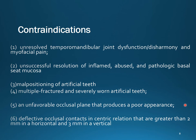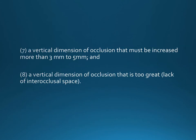If there are deflective occlusal contacts — a condition in which tooth contact diverts the mandible from the normal path of closure in different directions — relining is contraindicated. This applies when deflective contacts in centric relation are greater than 2 mm horizontally and 3 mm vertically.